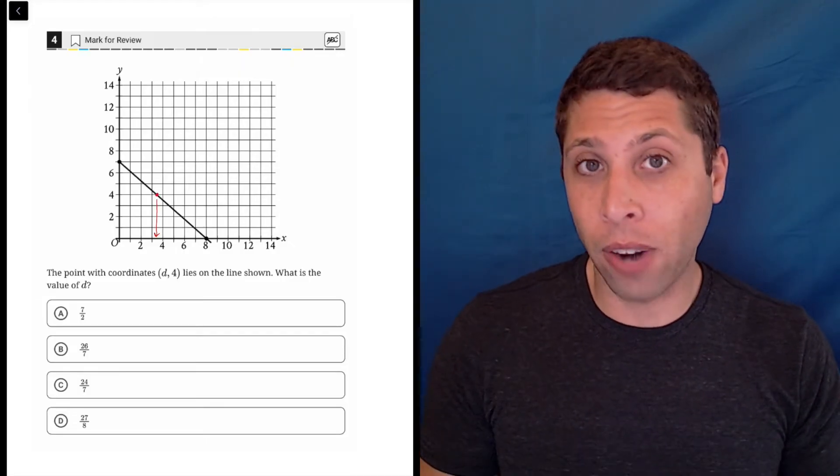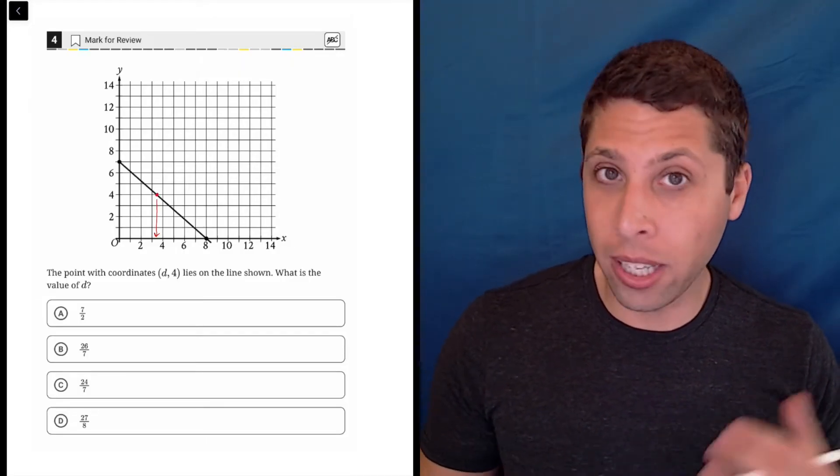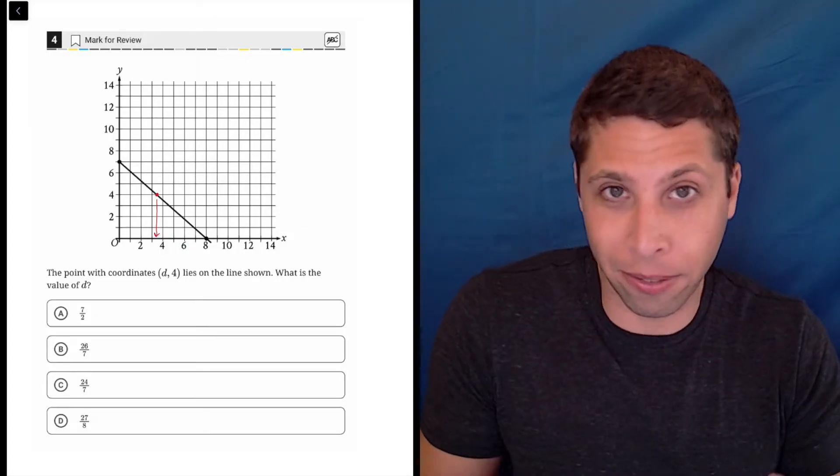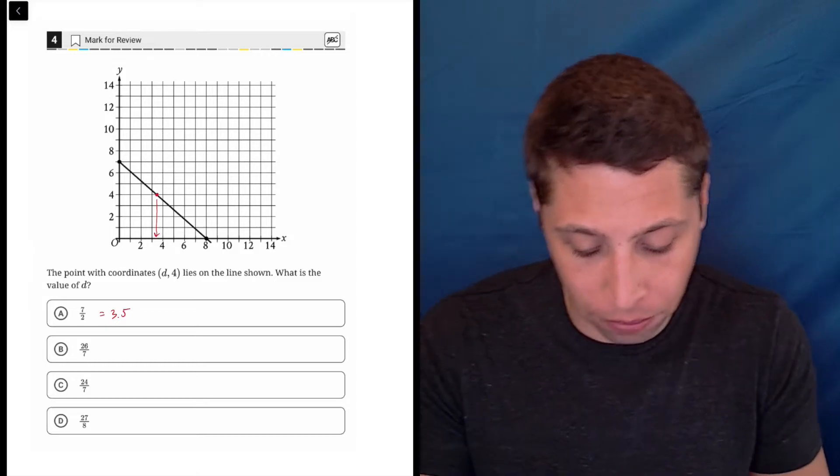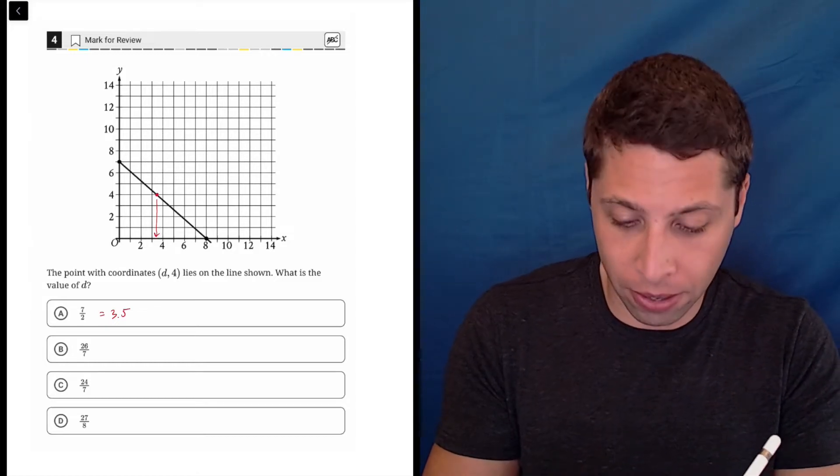But if you start turning all of these fractions into decimals, you see that they're also kind of three something. So it would be hard to estimate it right. Seven halves for example is 3.5, 26 sevenths is 3.714, so like I don't really know. 24 sevenths is 3.4.